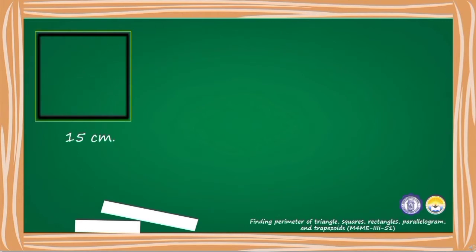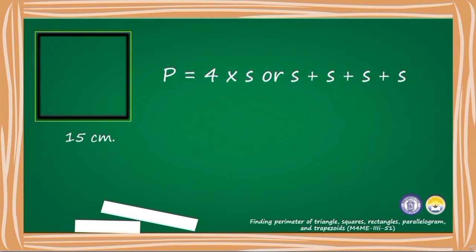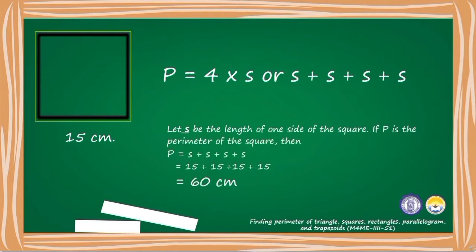This is a square whose one side measures 15 centimeters. The formula in finding the perimeter of the square is P equals 4 times S or S plus S plus S plus S. Let S be the length of one side of the square. If P is the perimeter of the square, then P equals 15 plus 15 plus 15 plus 15 equals 60 centimeters.